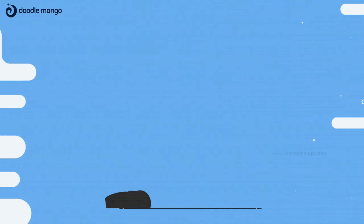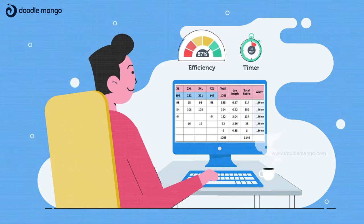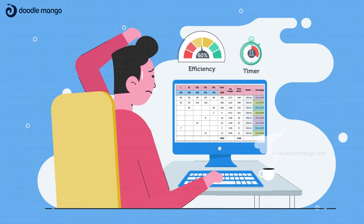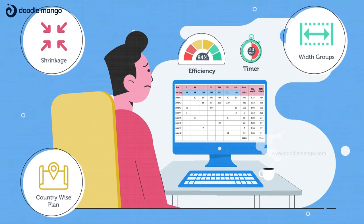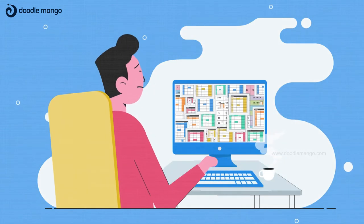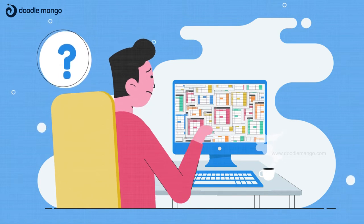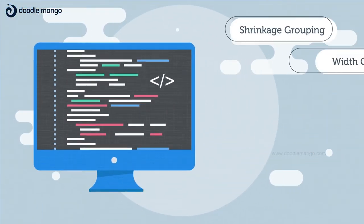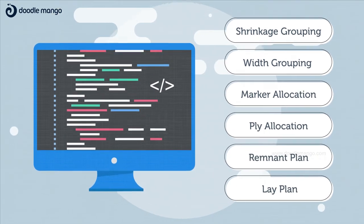Furthermore, the extent of fabric utilization depends on the quality of the cut order plan, but the complexity of the planning process increases exponentially with increase in parameters like number of shrinkage and width groups, country-wise plan, large size range, etc. Finding the best plan manually out of thousands of possible solutions may not be feasible. OptiCut automates the entire planning process and generates the best plan using advanced optimization algorithms, analyzing several fabric parameters to bring down the consumption and wastage as low as possible.